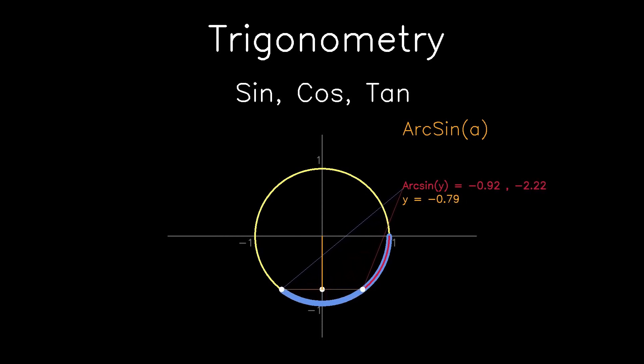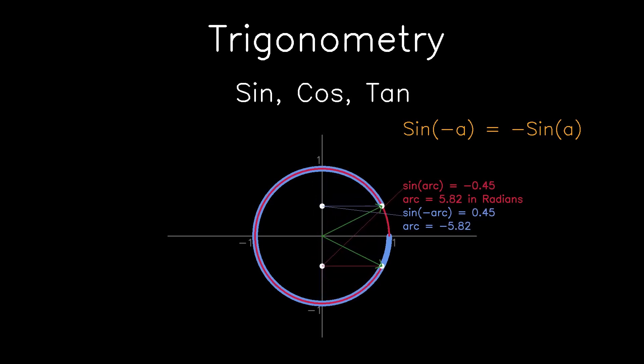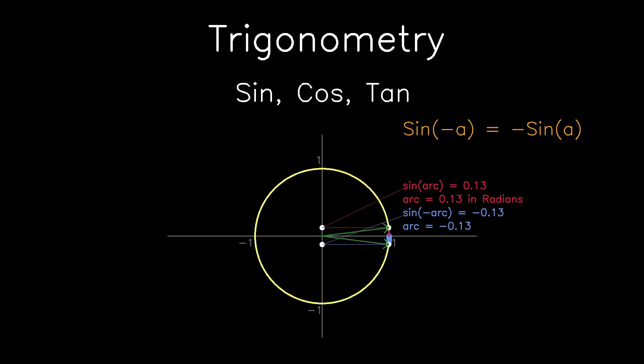Arc sine is a function that takes in the y-coordinate and outputs the corresponding arc lengths. There will be two unique arc lengths, one on either side of the circle, and the domain needs to be between negative 1 and 1. It's very easy to see that the sine of negative A is equal to the negative of sine A. This is because when we take the sine of negative A, we flip it about the x-axis, so of course all the y values become flipped. This means if we have a negative inside the sine function, we can just pull that negative out in front of the sine function.